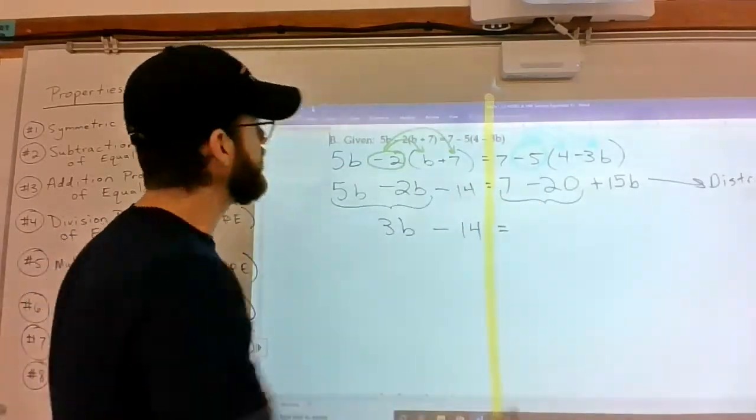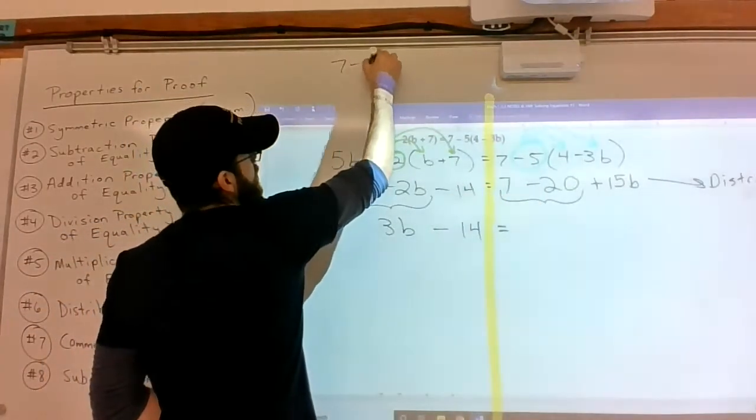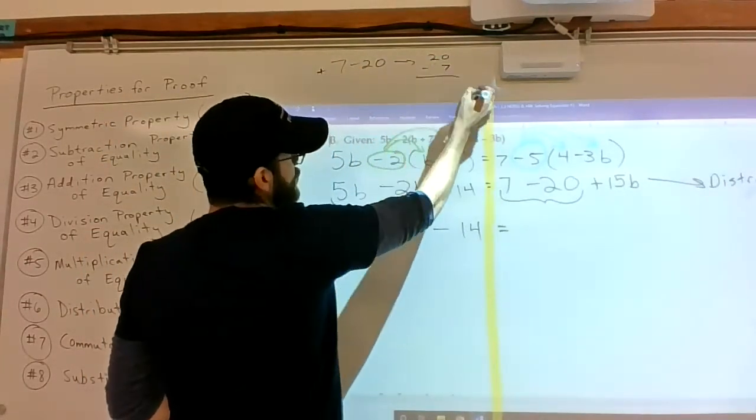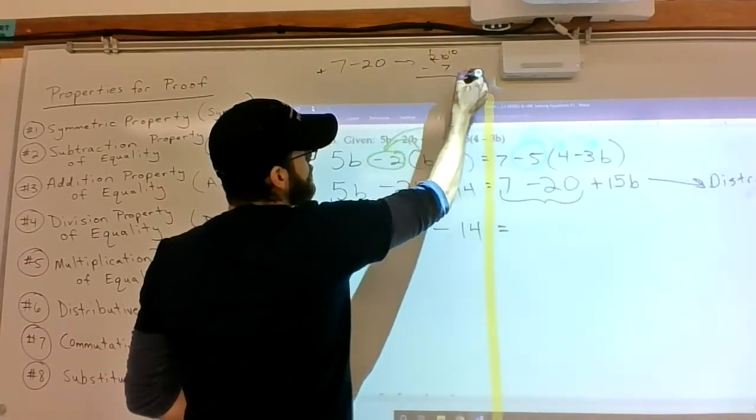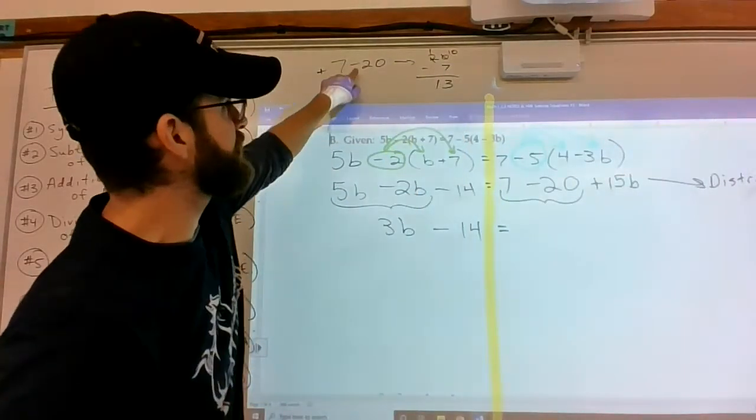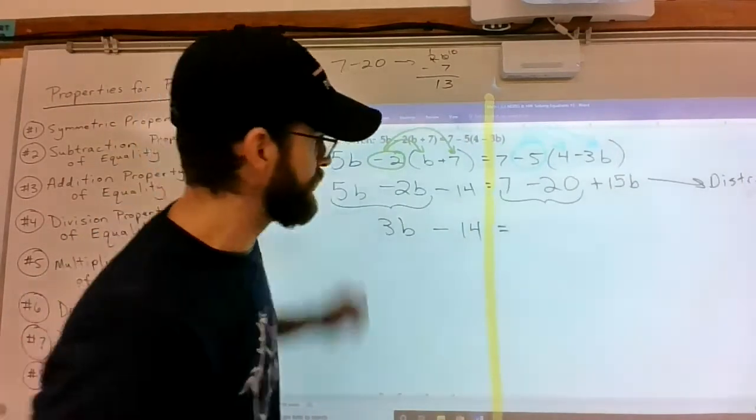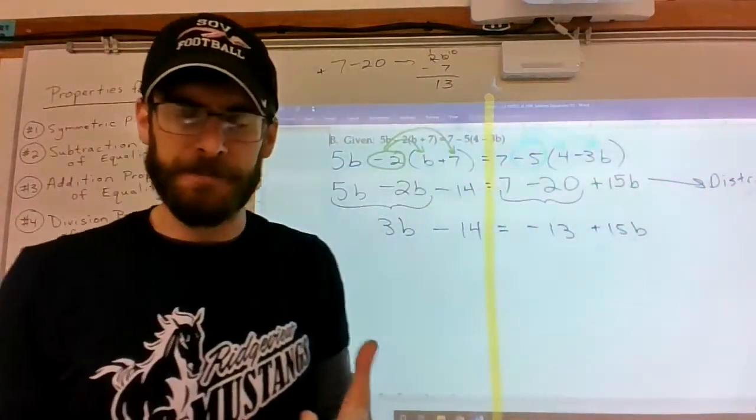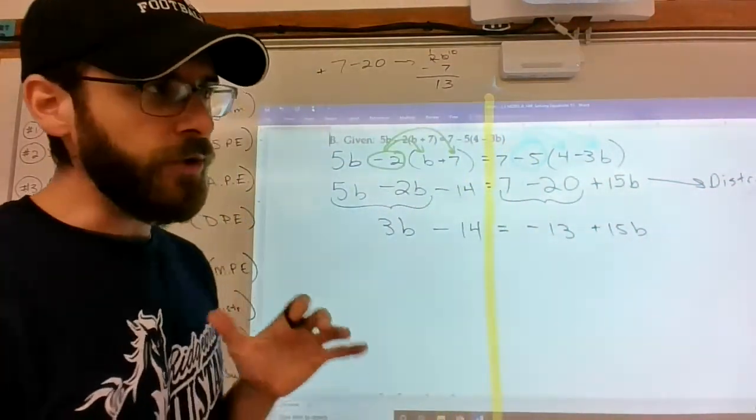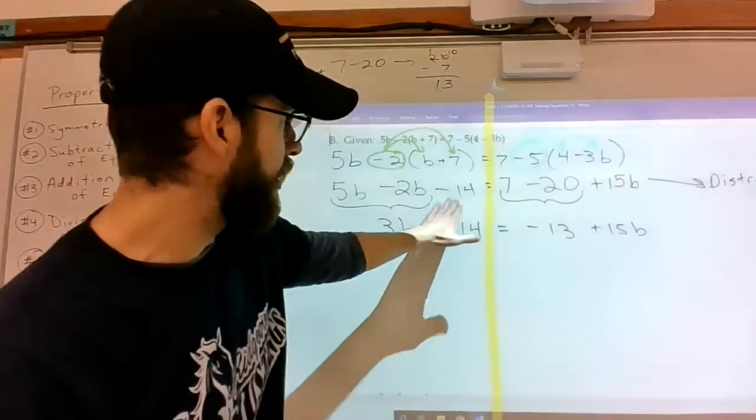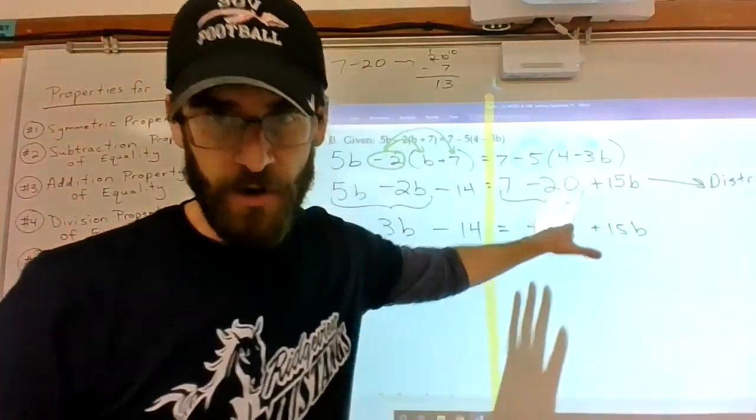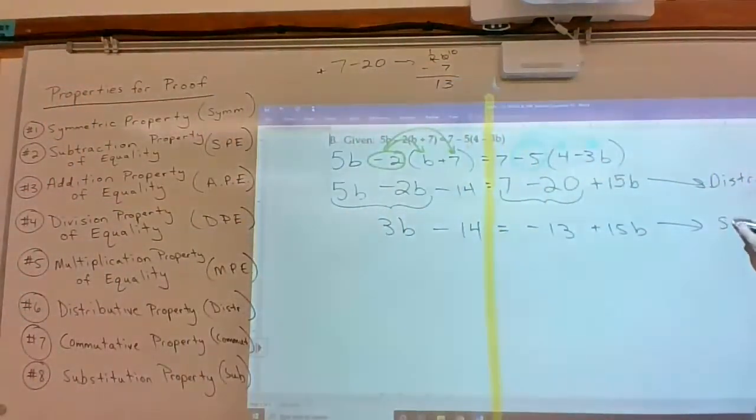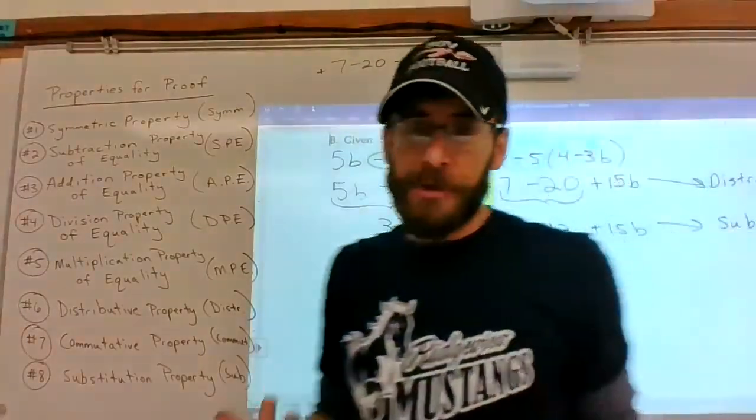That equals, and then do the same thing on the right. 7 minus 20 are like terms that need to be combined right away. So the difference between 7 and 20? Well, opposites subtract. So you would put the big number on top, subtract the little number. Remember, it'd be negative 13 because the bigger of the two is negative. Negative 13 plus 15b. That's basically like a substitution move. We should be moving the like terms side by side on the left and side by side on the right. But they were already where we needed them to be.